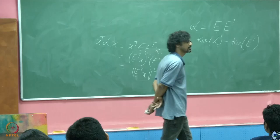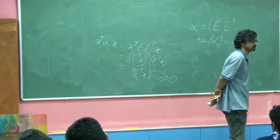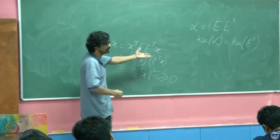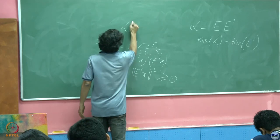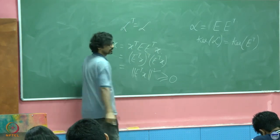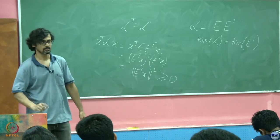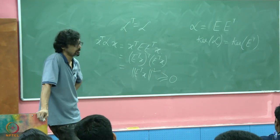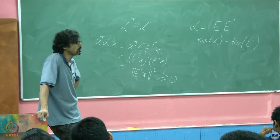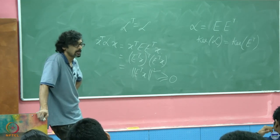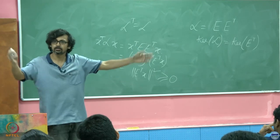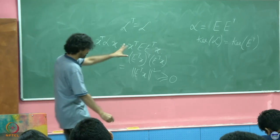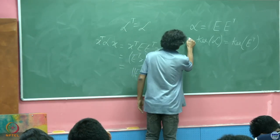The Laplacian is also symmetric. What do we know about symmetric matrices? They have real eigenvalues, are always diagonalizable, and their eigenvectors are all orthogonal — providing an orthogonal basis for the entire vector space.